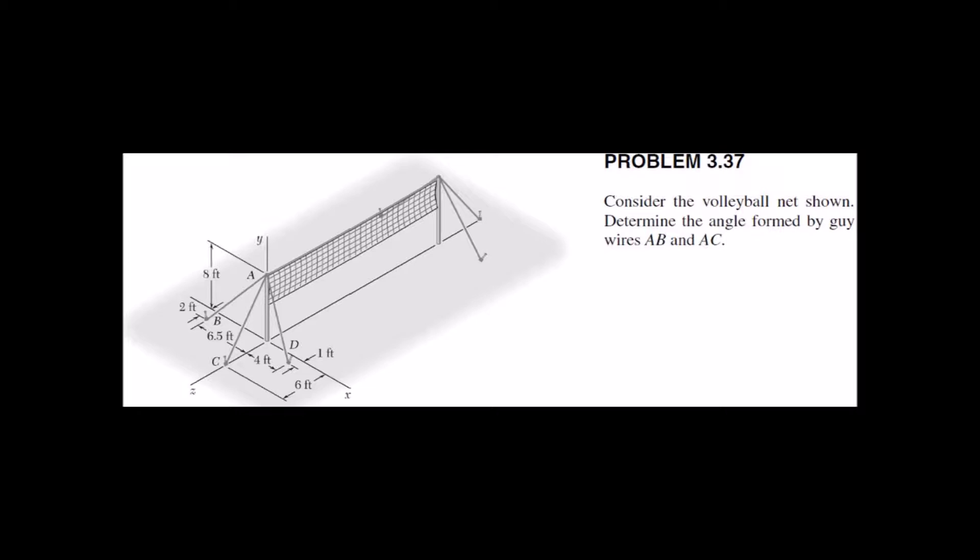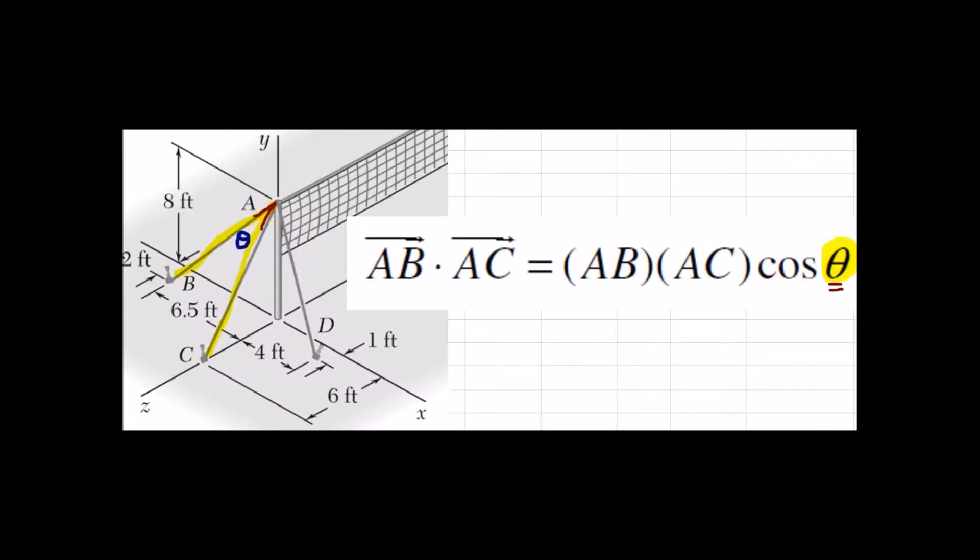Here's an example problem where we're going to use the dot product to find the angle between two wires. So all we're going to need is the vectors for these two wires and the magnitude of their length, and that'll give us the angle between them just by definition of the dot product.